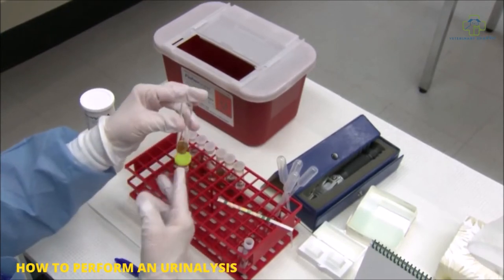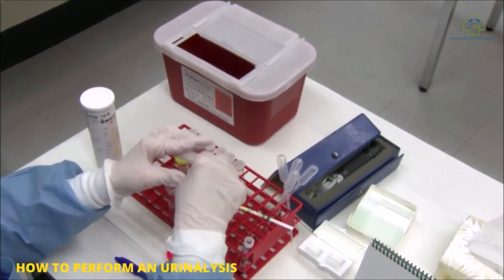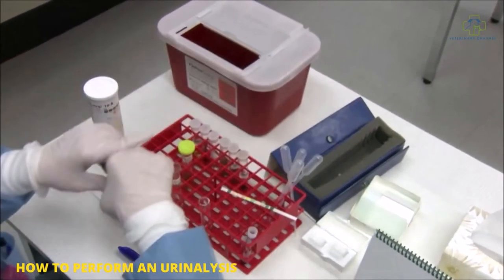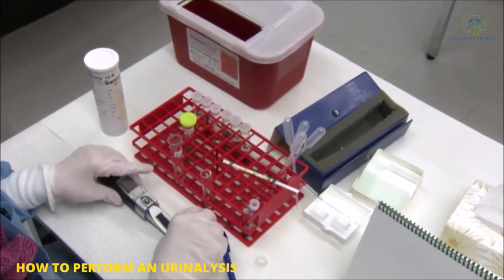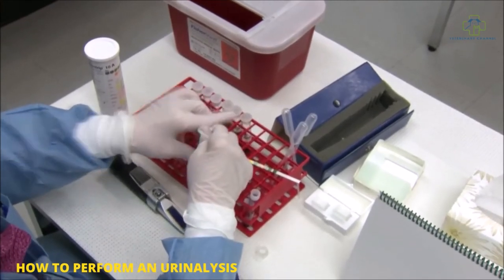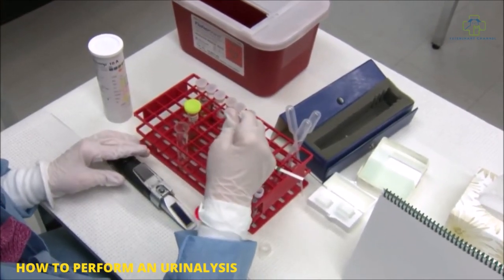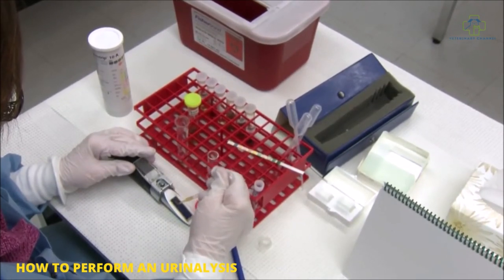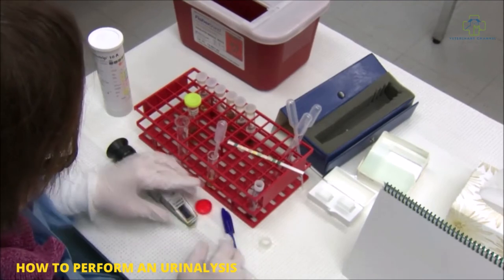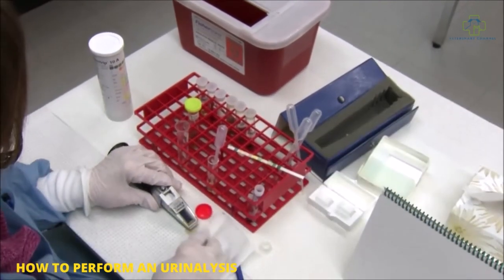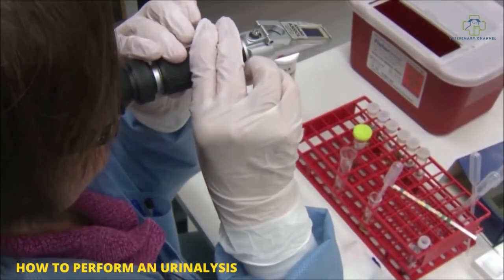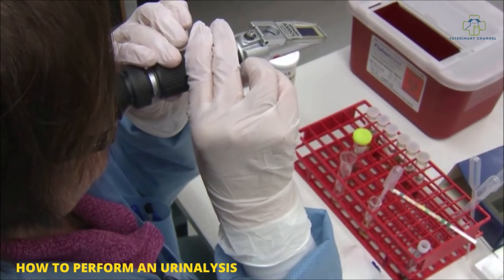The supernatant, the part that you've poured off, is what you want to use for your refractometer reading of the specific gravity. All refractometers are made slightly different, so you read the scale that is 1.0. You flood your urine onto the scale, make sure it covers the full length of the scale, and just look inside and get your specific gravity reading.